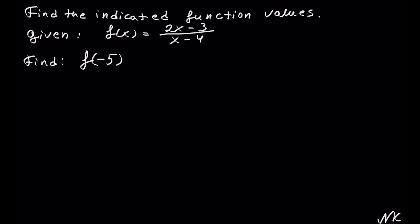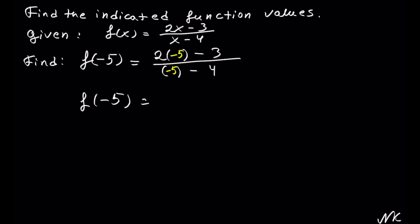Here we're going to calculate f of negative 5 of the function that is 2 times x minus 3 out of x minus 4. We are going to substitute negative 5 instead of x. We get f of negative 5 is equal to 2 times negative 5, which gives negative 10, minus 3, out of negative 5 minus 4.